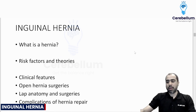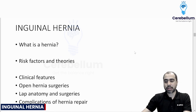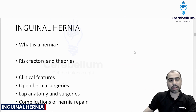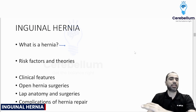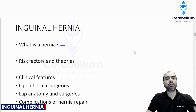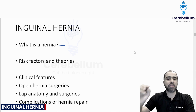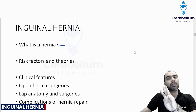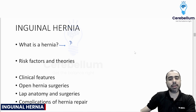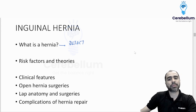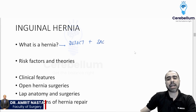Now coming to inguinal hernia. We would have studied this in first year, second year, as well as in final year, but do we really understand what a hernia is? From a surgical perspective, most hernias — I would say 90% of hernias — are going to have three components: a defect, which means a weakness or a gap in the muscle or aponeurosis; a sac, which is the peritoneum; and within the sac, some content.